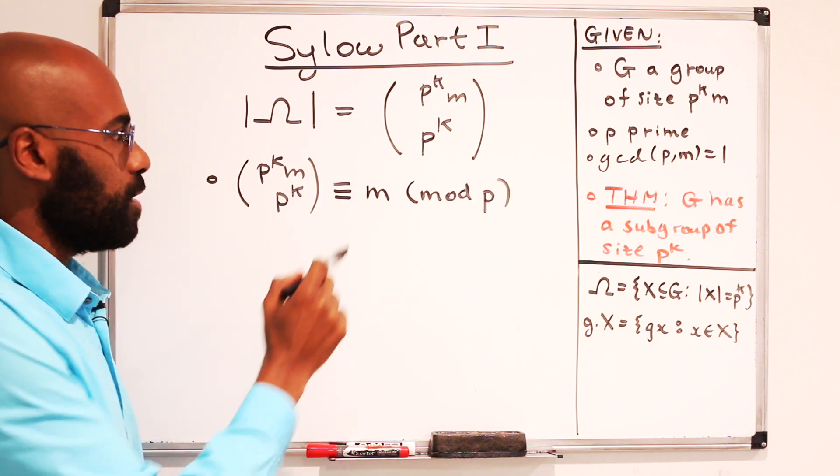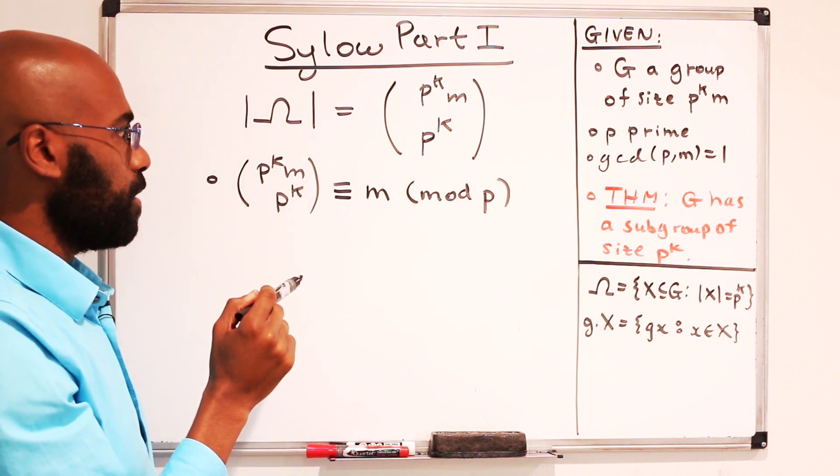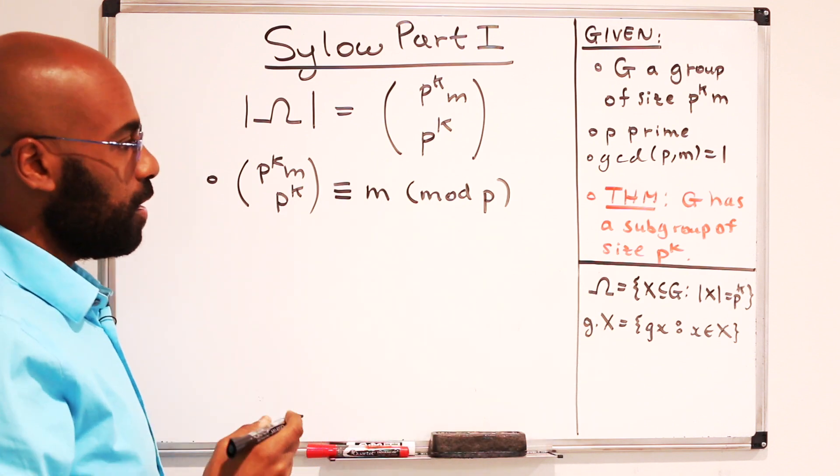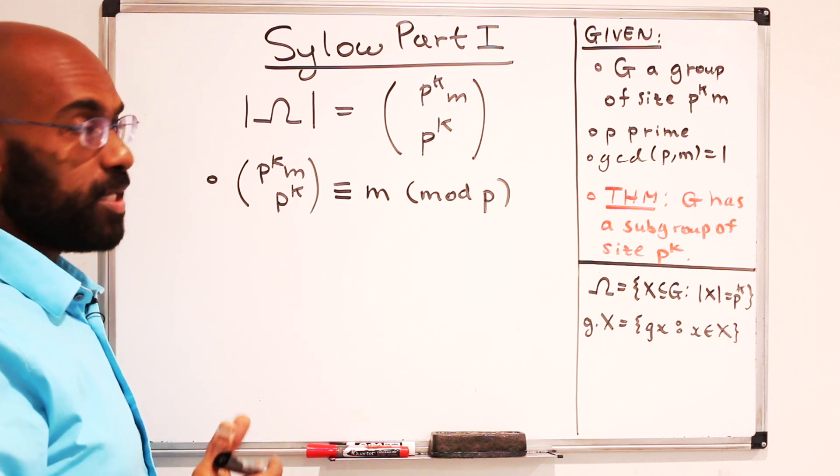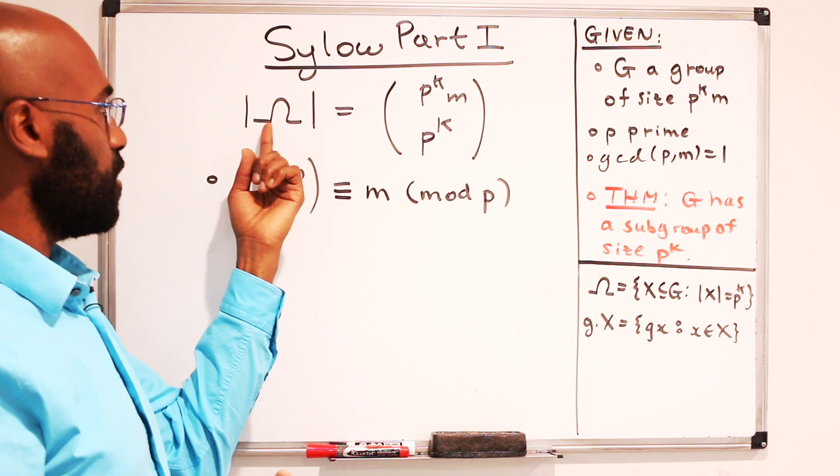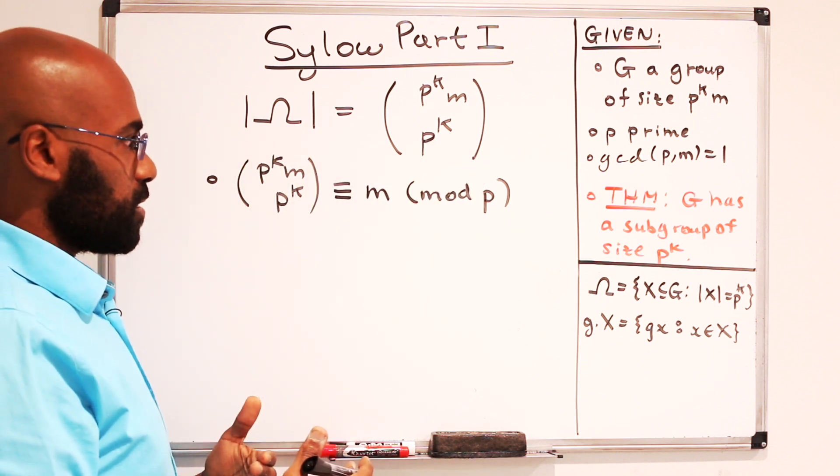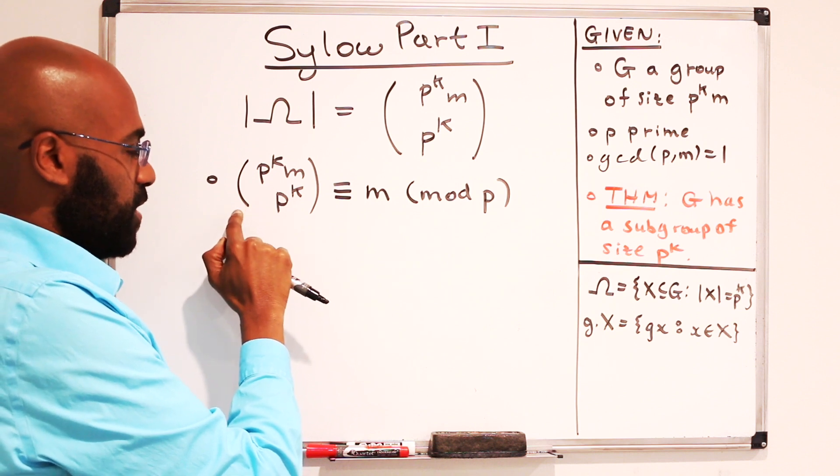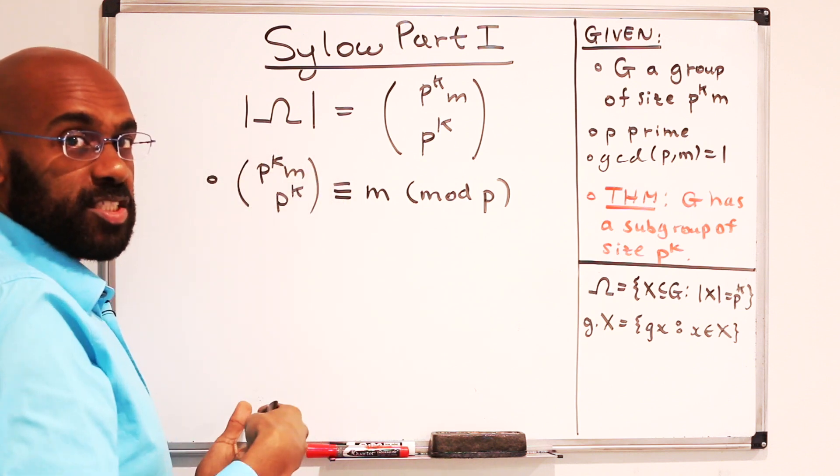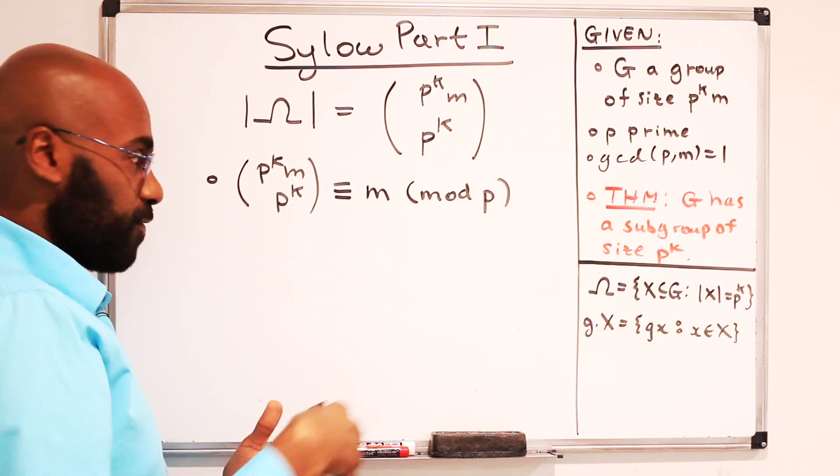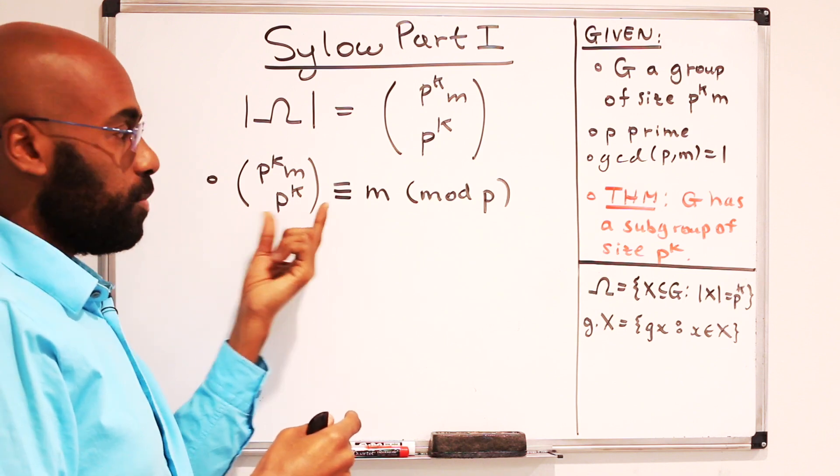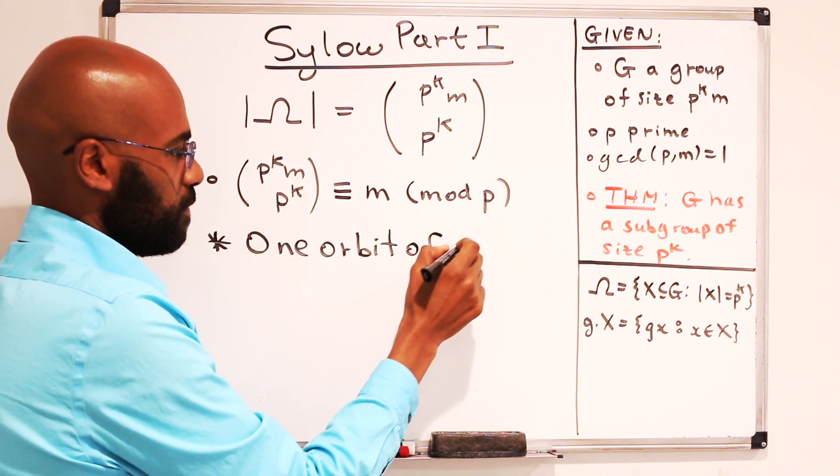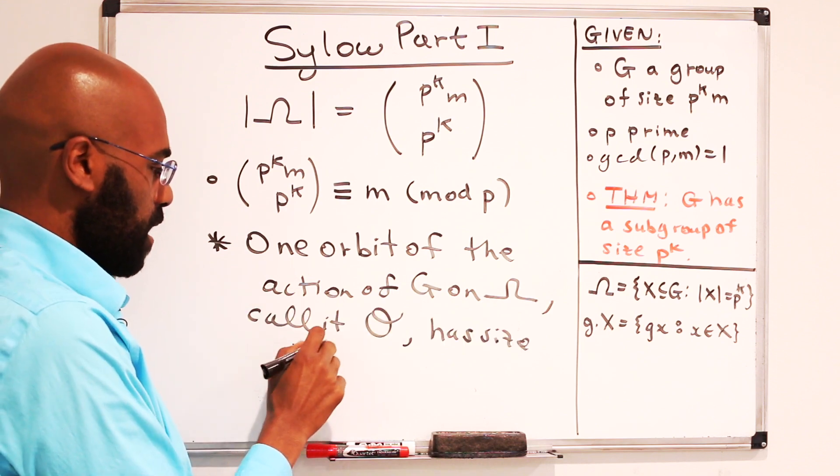So one can prove combinatorially that this happens to be congruent to m modulo p. The point of this, though, is that m is co-prime with p. So what this means then is if we look at this action of G on omega, the action is going to split into orbits. And because the number of elements in omega is this thing right over here, one of the orbits is not going to have p as a factor in its size. Because this is the entire size of the set omega, omega splits into a disjoint union of orbits. The sum of those orbit sizes has to be the size of this entire set, but that's not a factor of p. So we can say then that one of the orbits of this action of G on omega, let's call it O, has size not a multiple of p.